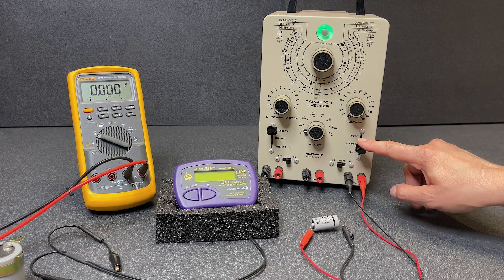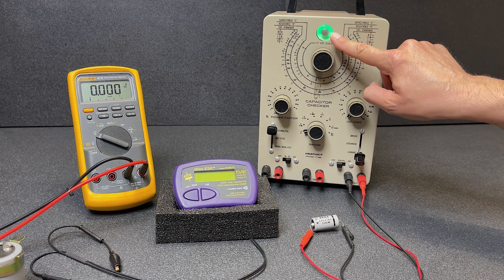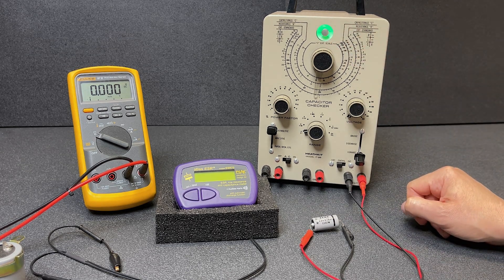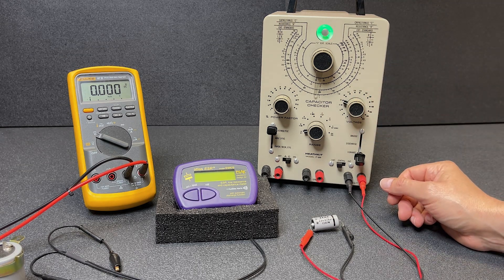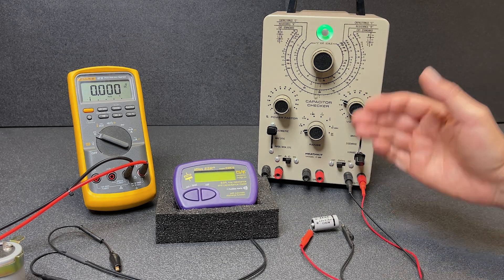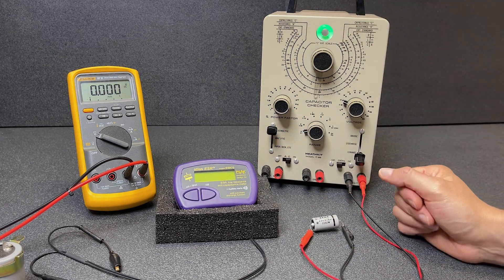OK, I'm going to put this into leakage now. And we're looking for this eye to stay open at the working voltage of 25 volts. Let's ramp it up to 25. You can see it closes a little bit and then starts opening again. This capacitor is just fine. The ESR was fine and there is no parallel leakage.